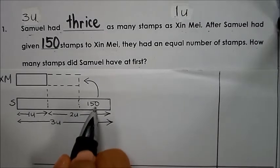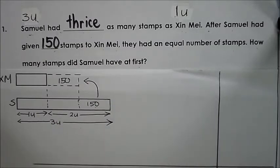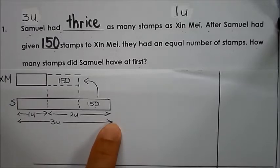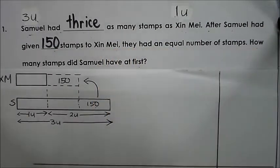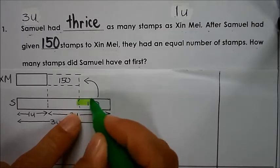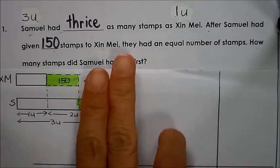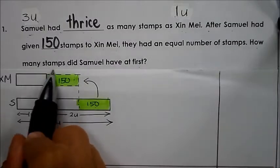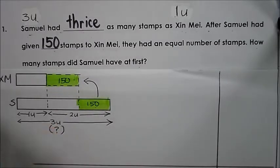So after Samuel had given 150 stamps to Singmay, both of them will have equal number of stamps. Samuel had three times as many stamps as Singmay, so Singmay has one unit and Samuel has three units. The question asks how many stamps did Samuel have at first, which is three units.